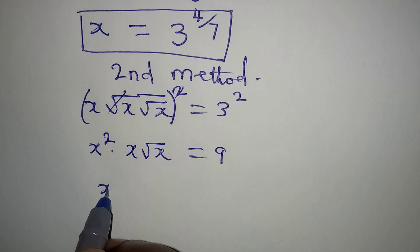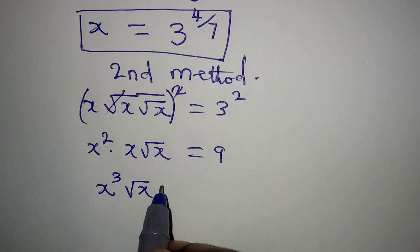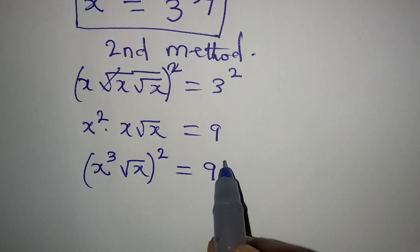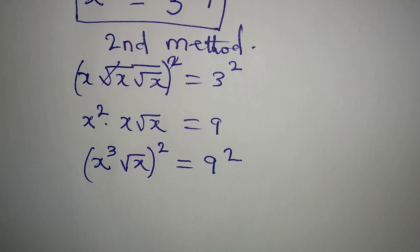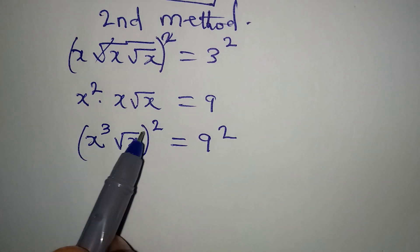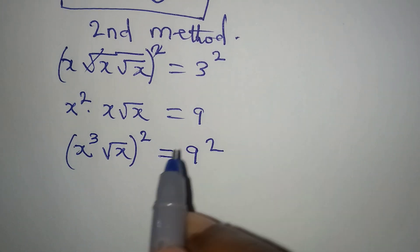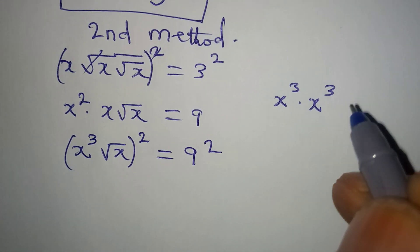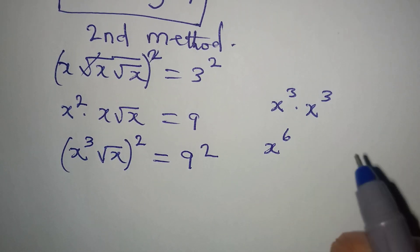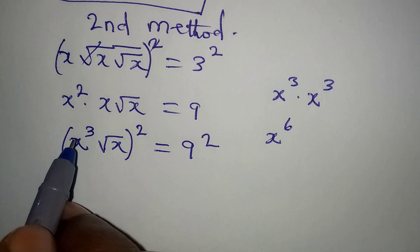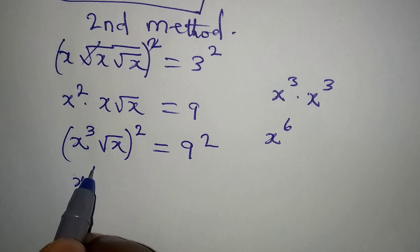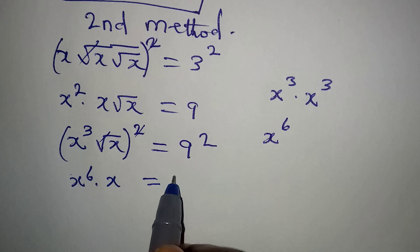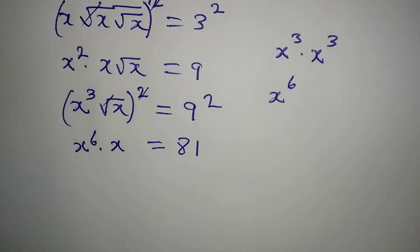So I multiply those together to get x to the power of 3, times root x, and this is equal to 9. From here we are going to square both sides again. If we square x to the power of 3, that gives x to the power of 3 multiplied by x to the power of 3, and we pick one base and add the powers to get x to the power of 6. Then multiplying by x gives us x to the power of 6 times x, equal to 9 squared which is 81.